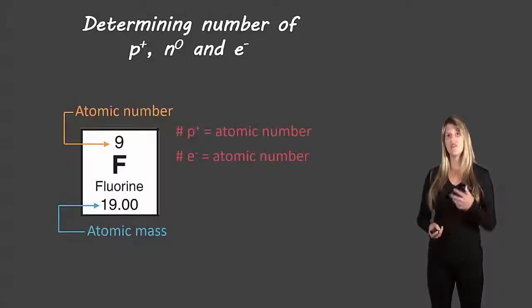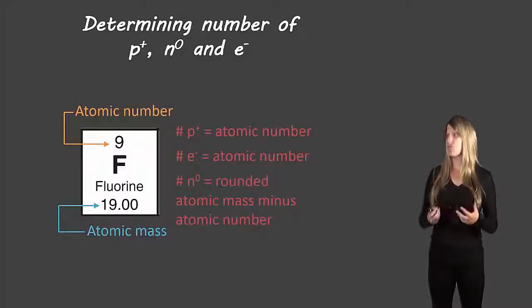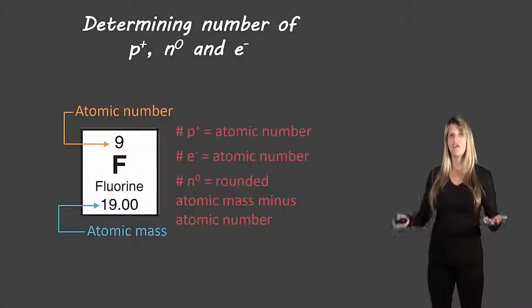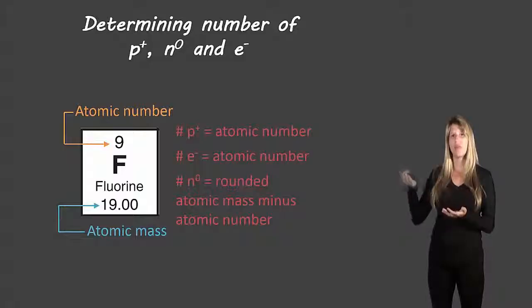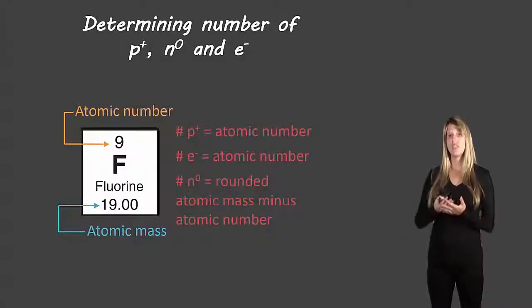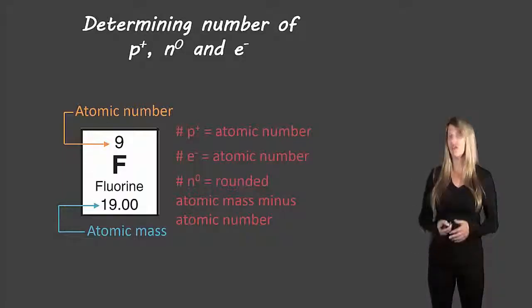Now to find the most common number of neutrons we have to do a little bit of math. So it's the rounded atomic mass minus the atomic number. In this case the atomic mass for fluorine is 19. If we round that it stays at 19. If we take 19 and we subtract the atomic number 9, we end up with 10. That means 10 neutrons. So the most common isotope of fluorine will have 10 neutrons.